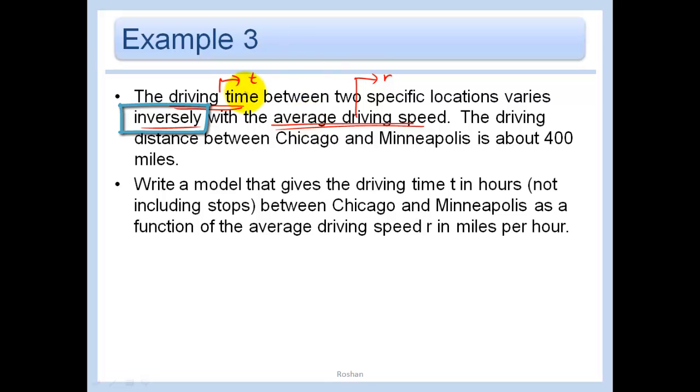And so since it varies inversely, we have T equals A over R. And they say that the driving distance between Chicago and Minneapolis is 400 miles. Hey, does anybody see a distance equals rate times time thing going on here? If I go to solve for T, divide by R, divide by R, I get T is equal to D over R. Look at that. So we know our D is 400 over R.